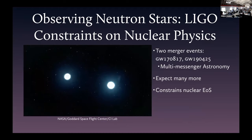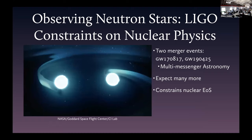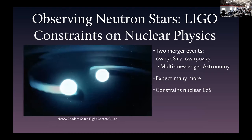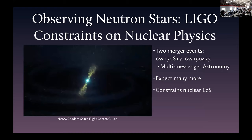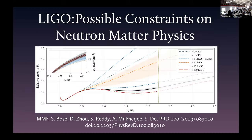Fairly recently there have been nice observations of neutron stars. When they merge, they emit gravitational waves detected about three hours away, as well as in a few other places. From a couple of merger events, the gravitational fields cause the stars to swish a little bit, giving some properties about their compressibility and equation of state. We're using these to try and constrain the nuclear physics interactions — work done with collaborators in the department and at UW.